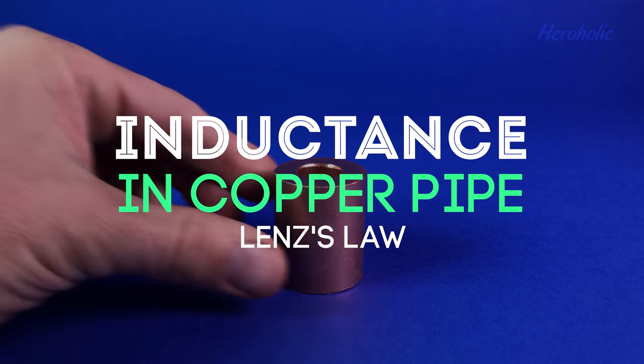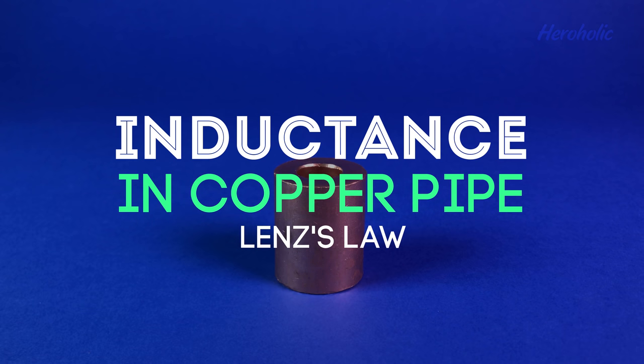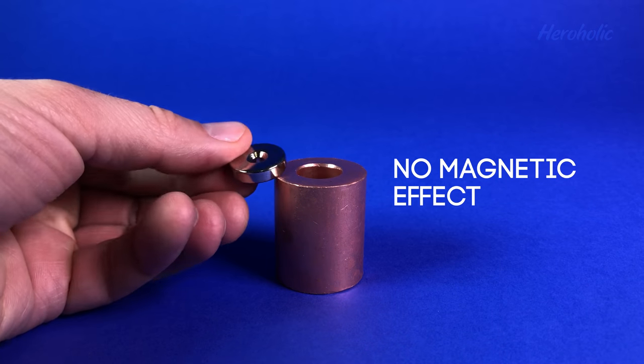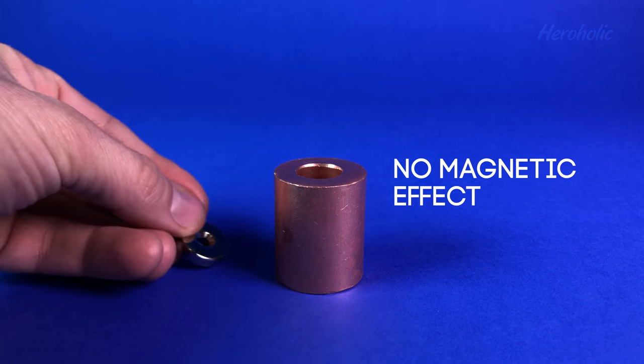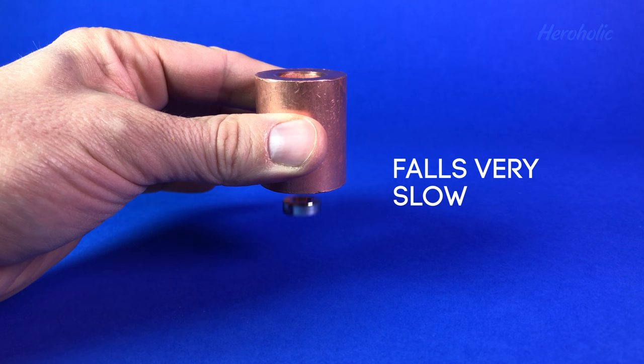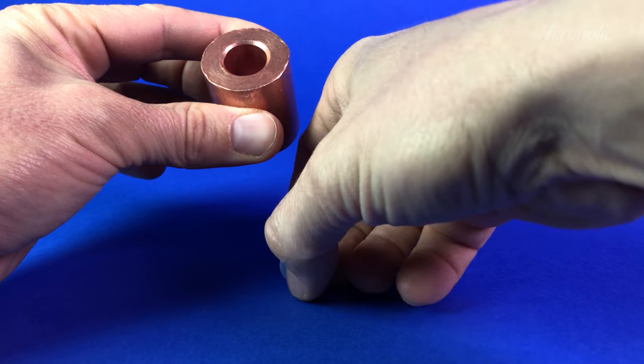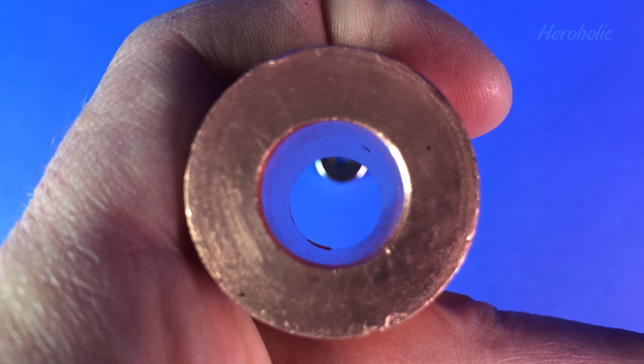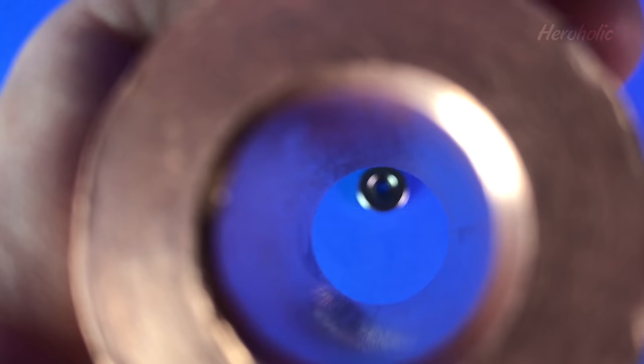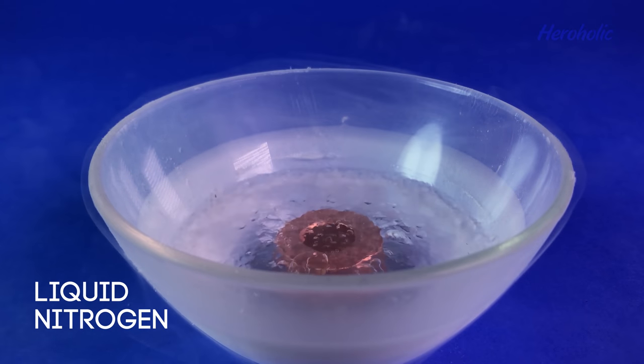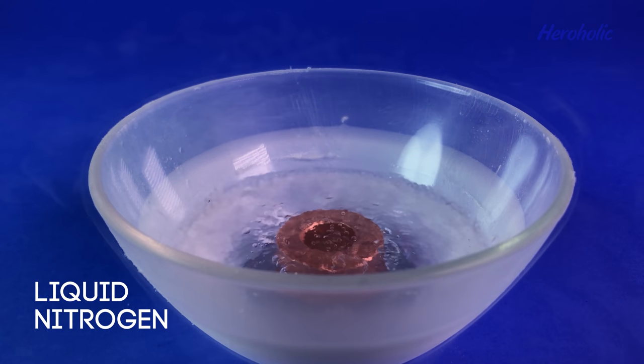Inductance in copper pipe. You will need a small round magnet and a fragment of copper pipe. As you see, the magnet doesn't attract copper. But if we drop the magnet through the pipe, it will travel through it much slower than expected. This effect is called inductance. But what happens if we freeze the copper pipe in liquid nitrogen?